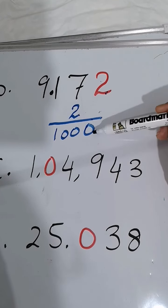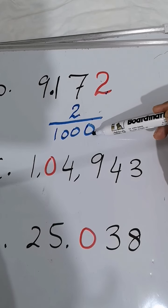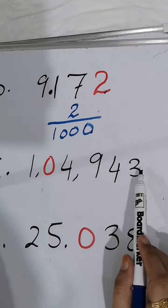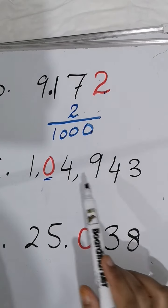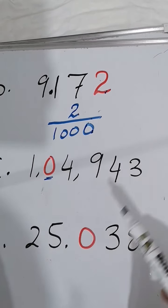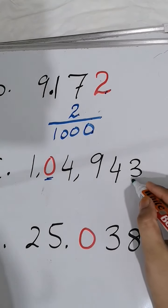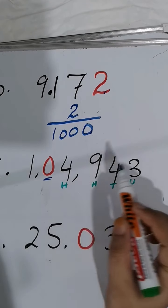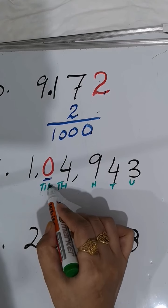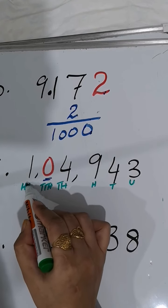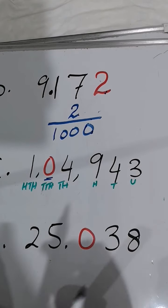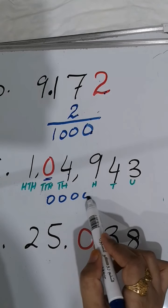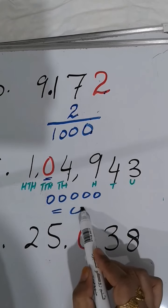The next number is 1,04,943. The colored digit is 0. Zero is always zero, doesn't matter what. But if you count the places, it is unit, ten, hundred, thousand, ten thousand, hundred thousand. So zero is at the ten thousand place, which means 10,000. But zero is just zero.